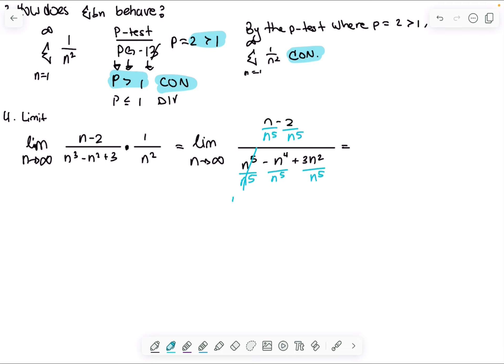So divide everything by n to the fifth. So this cancels out to be one, this cancels out to be one over n to the fourth, this cancels out to be one over n, this cancels out to be three n to the three. And so we have the limit as it approaches infinity of one over n to the fourth minus two n to the fifth, one minus one over n plus three over n cubed. And so when we plug in infinity, infinity to the fourth is just infinity, infinity to the fifth is just infinity, infinity to the third is still just infinity. So all of these become zero. This is zero, this is zero, and so essentially we're left with zero over one, which is just zero.